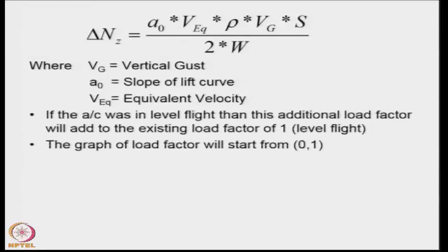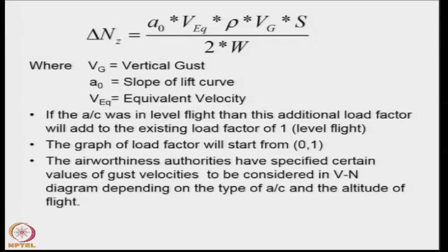If the aircraft was in level flight, the load factor was 1. So this delta nz will act above the 1, and hence the graph for the load factor due to vertical gust will always start from 0, 1 because it would correspond to level flight at vertical load factor equal to 1.